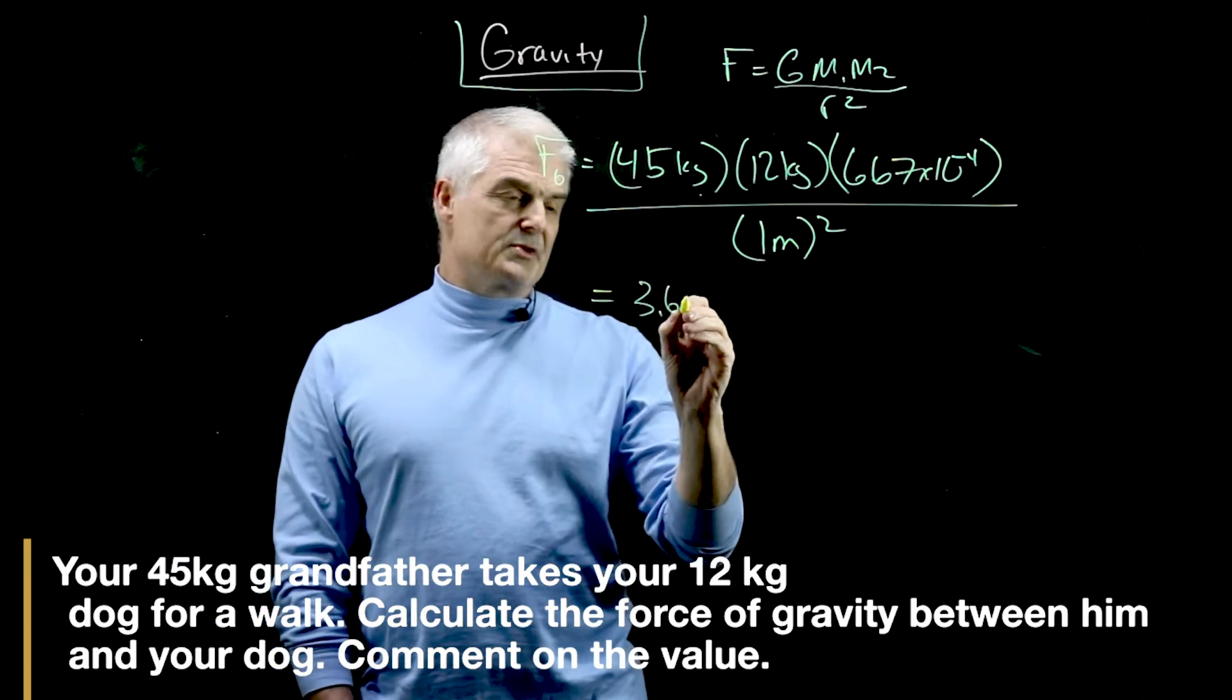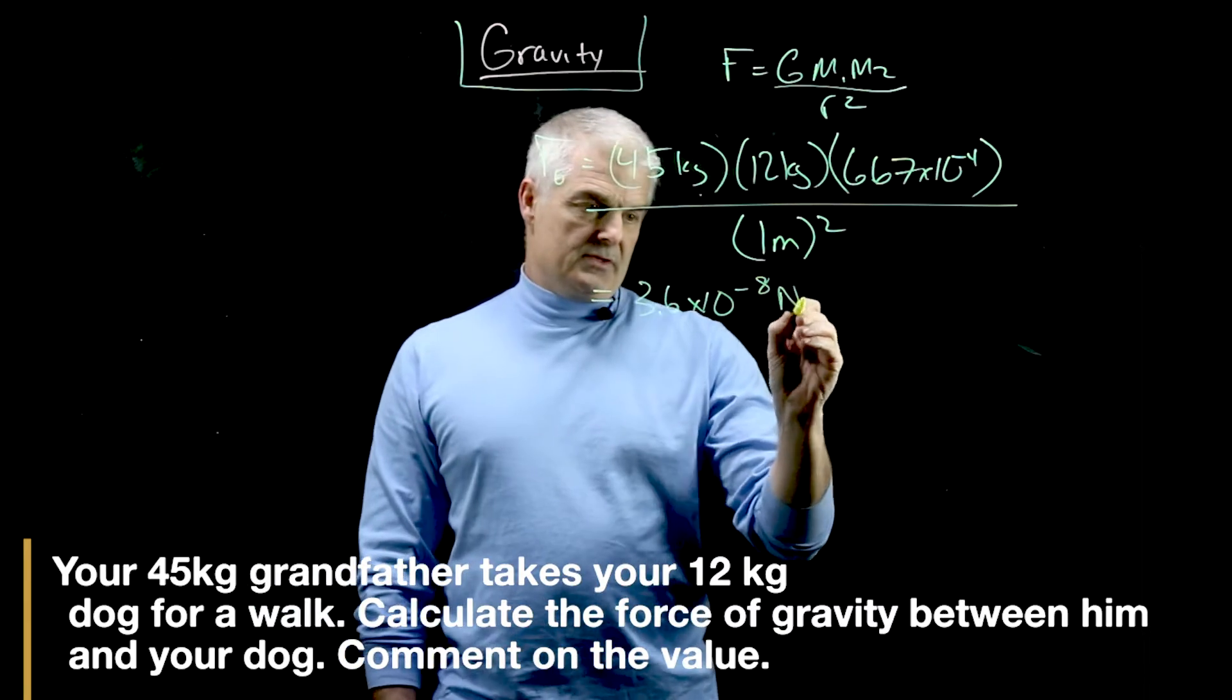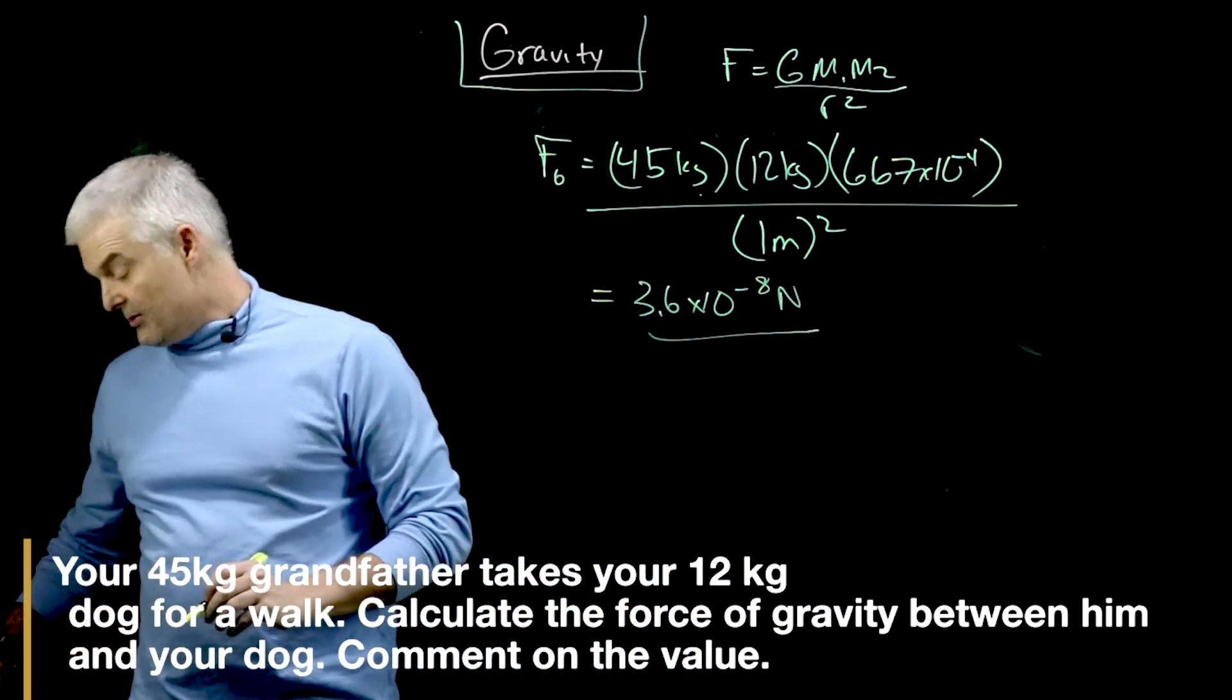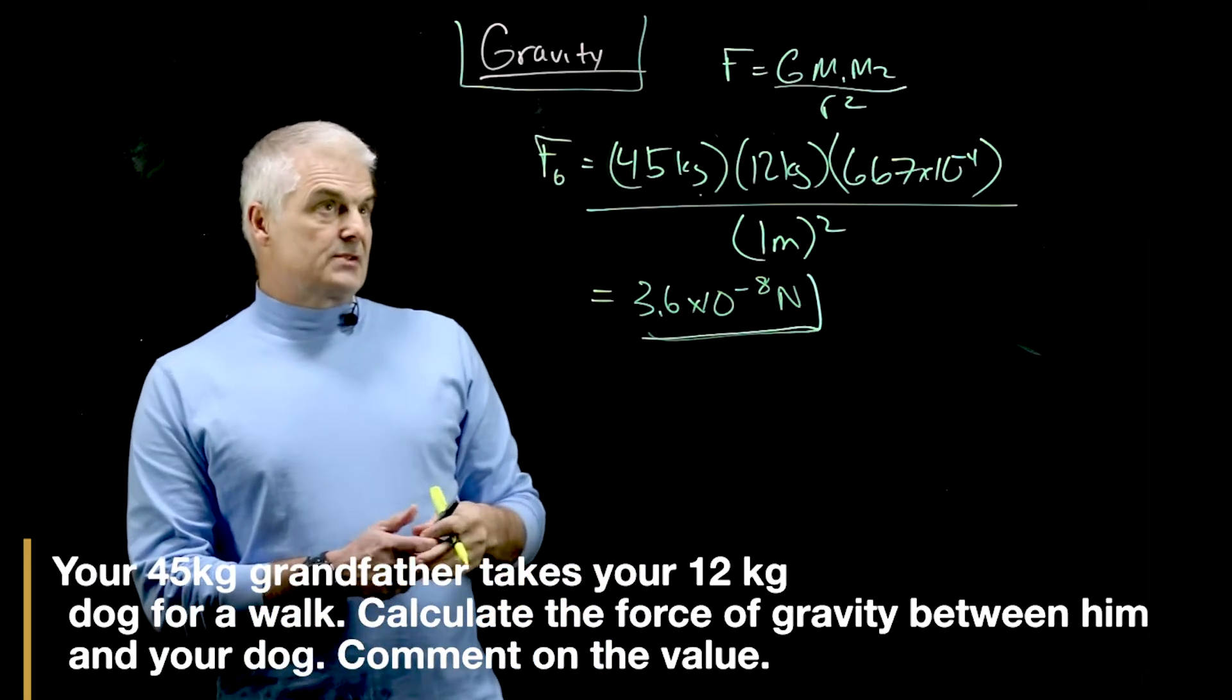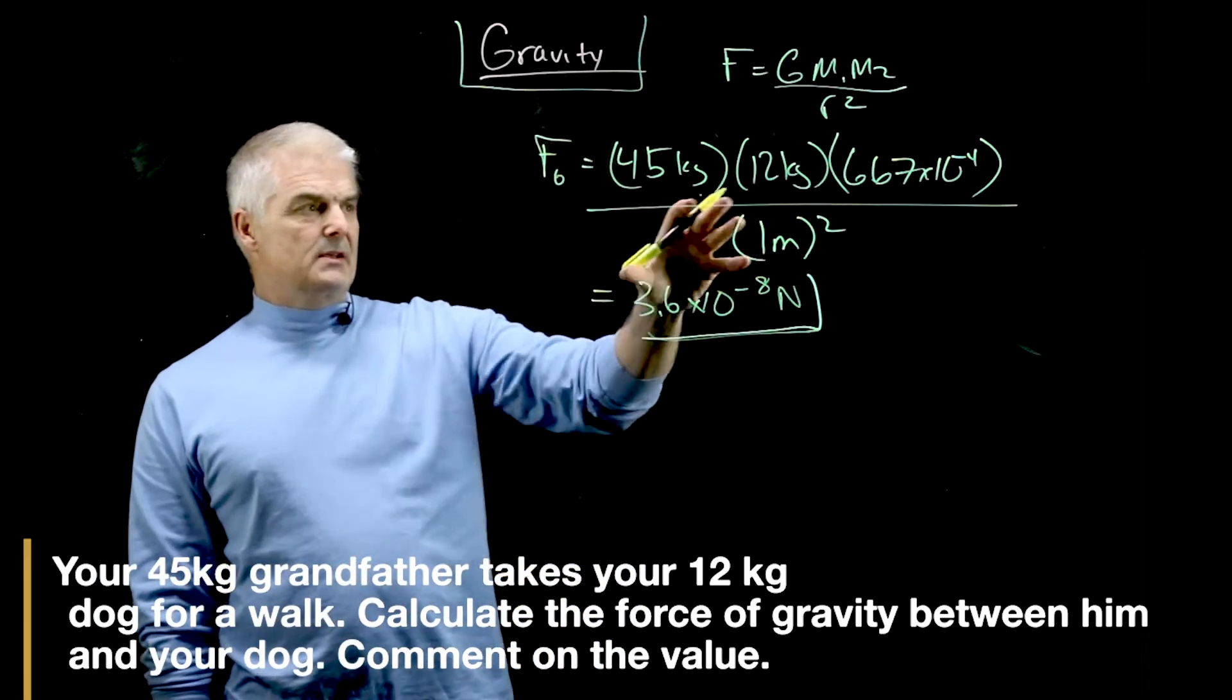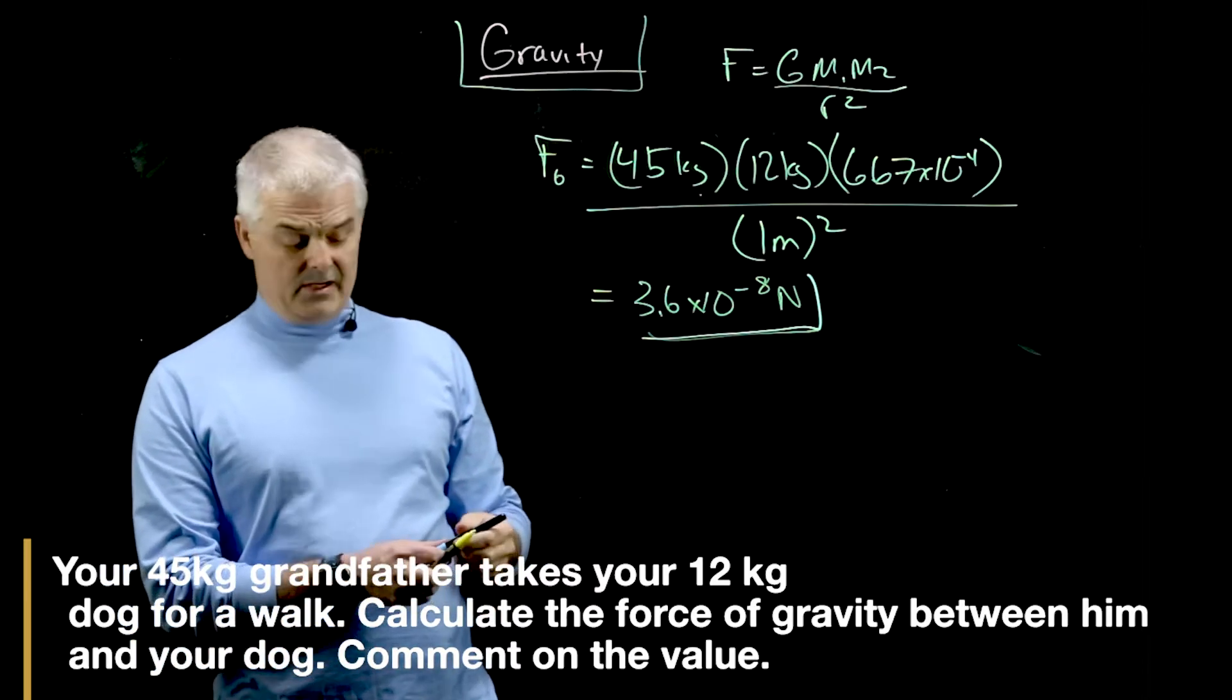Let's talk about this number: 3.6 times 10 to the minus eighth newtons. You realize that's a tiny number, right? Itty bitty small number right there because we're talking about the attraction between these two objects. Let's compare that to the attraction he has for the earth.